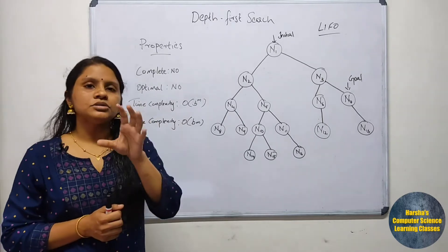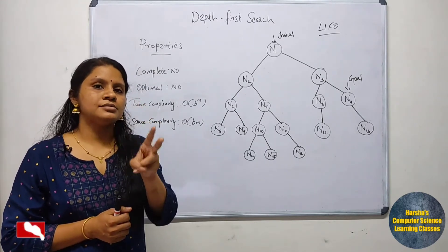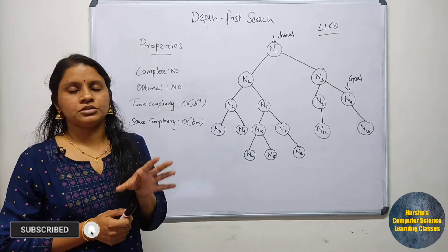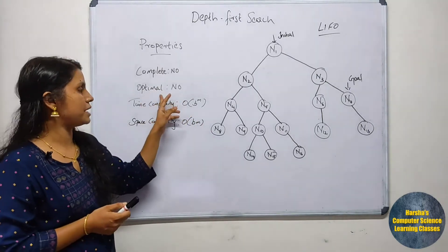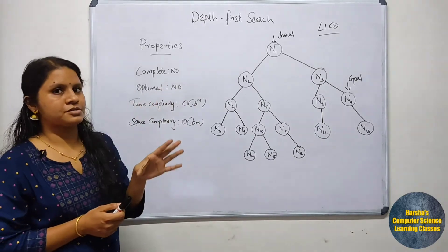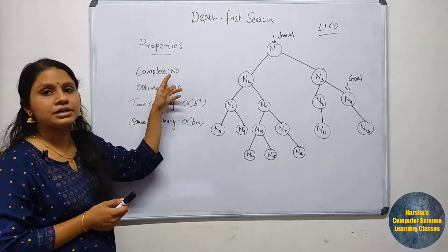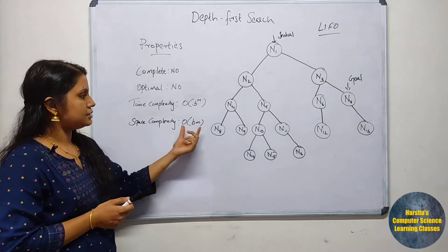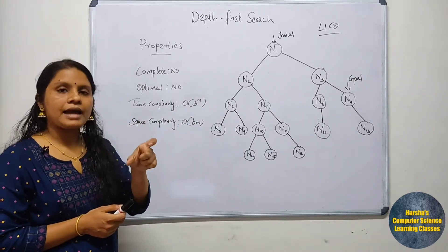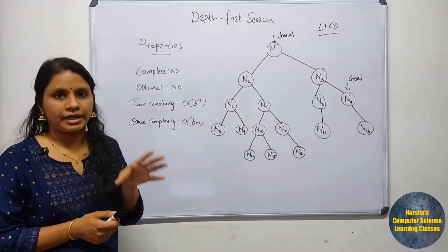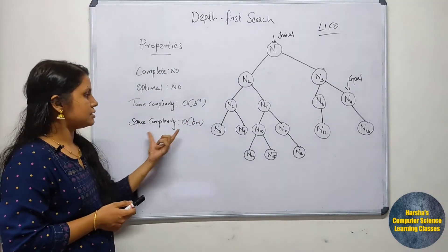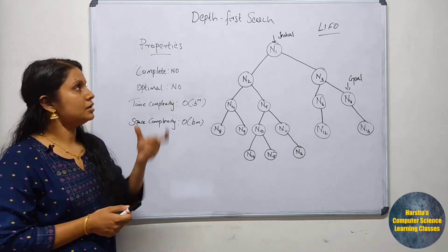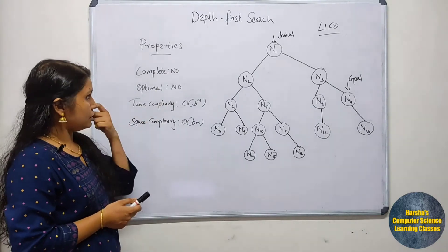Both the tree-based and graph-based versions of DFS provide a non-optimal solution — optimality is not guaranteed. The algorithm is also non-complete. Comparing time complexity and space complexity: with branching factor B and depth level M, the space complexity is represented as O(BM), which means the space complexity is linear in DFS.